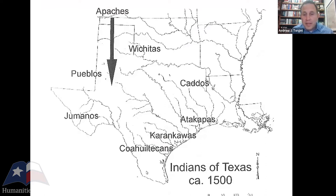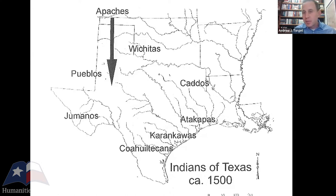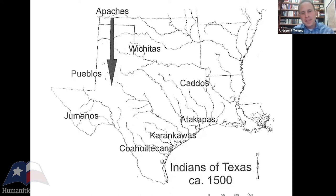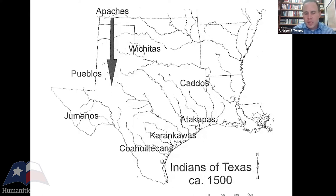Further down south are the tribes in modern-day south Texas and northern Coahuila. Anthropologists have grouped them together as Coahuiltecans — not a tribal name, just a label for all the tribes living between Coahuila and Texas. They live in a very challenging environment in the valley. Today we dump a lot of irrigation on the valley and it grows a lot of food, but back then there was much less rainfall and sandy soils — a really hard place to survive. These tribes were pushed out of more lush areas by other tribes, leaving them in some of the most challenging environment in Texas, making them one of the weaker groups in the region.